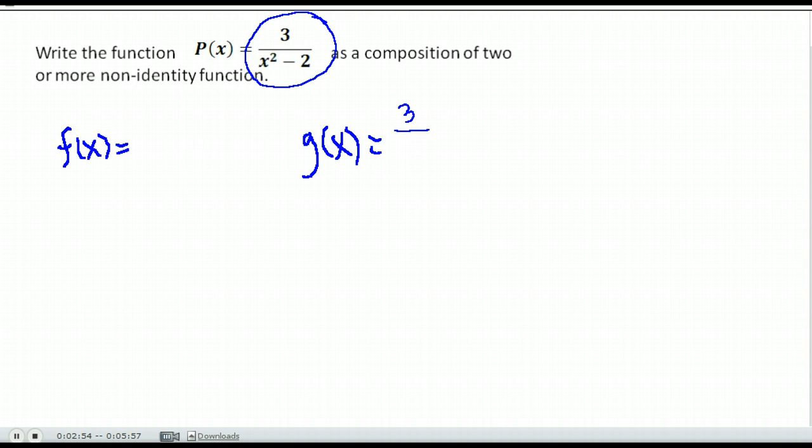So I'm going to say that 3 over x, 3 over something, is one of my functions, and the other function is that something. The something that was there is x squared minus 2. So again, we're going to do g of f of x because we took 3 over x and replaced the x with x squared minus 2 to get this function p of x.